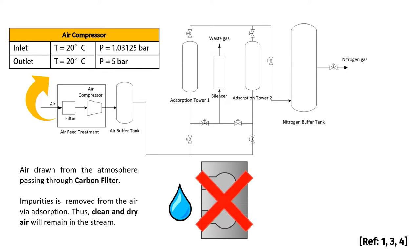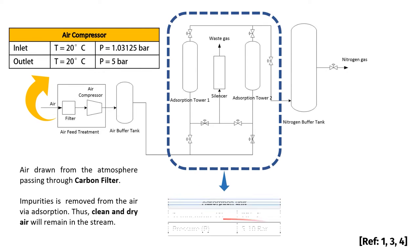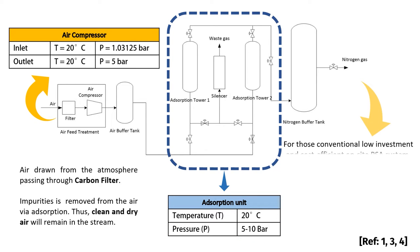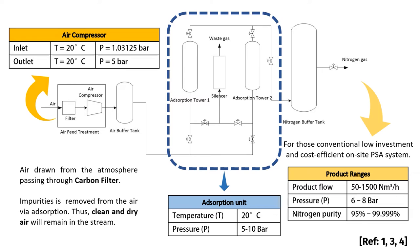The adsorption unit operates within 5 to 10 bars, and the outlet gas will be nitrogen, which typically falls under product ranges of flow rate 50 to 1500, pressure of 6 to 8 bars, and purity of 95% to 99.999%.